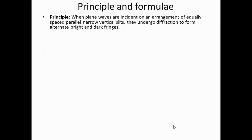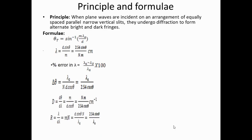Coming to the principle and formula: when plane waves are incident on the grating — an arrangement of equally spaced parallel narrow vertical slits — they undergo diffraction, forming alternate bright and dark fringes. The maxima condition is d sin θ = mλ, from which the key equations are derived.